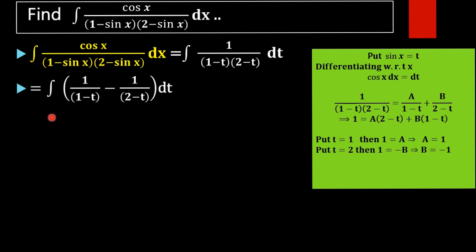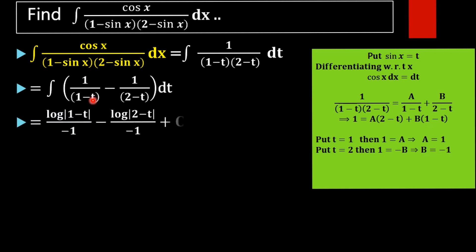Now, the integral of 1 by (1 minus t) dt is log mod (1 minus t) divided by negative 1 — since the coefficient of t is negative 1. Similarly, the integral of negative 1 by (2 minus t) dt gives negative log mod (2 minus t) divided by negative 1. The negatives cancel, giving positive contributions.